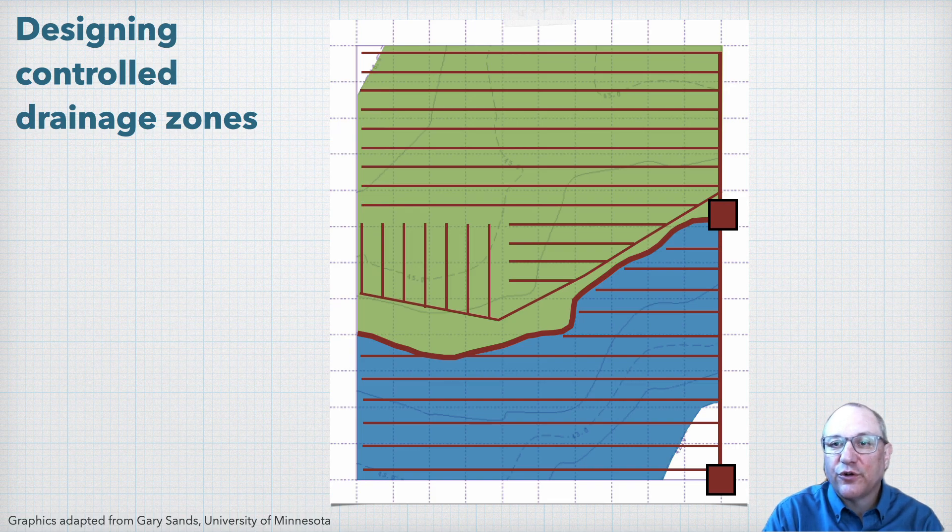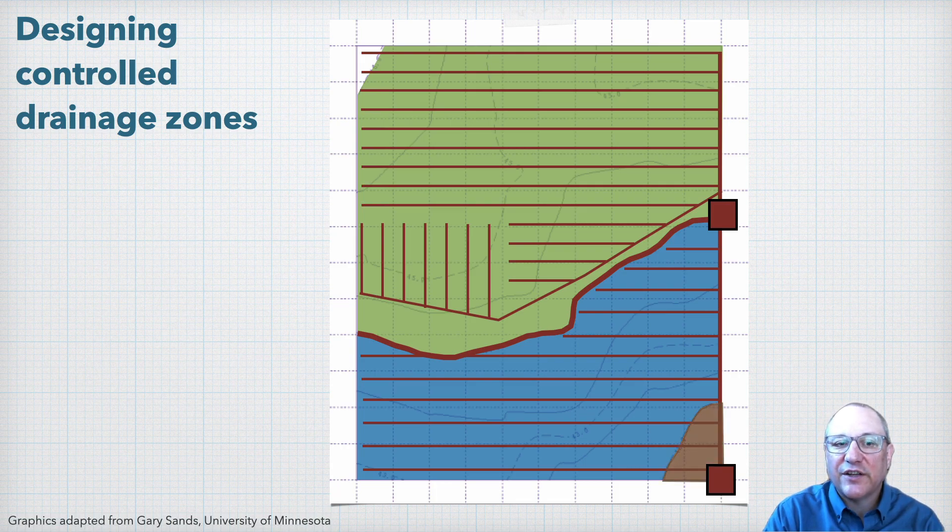Since we put our first control structure at 41.5 feet at the bottom of the field, instead of at 42 feet, which is the bottom elevation of the management zone, what happens in this small area then between those elevations?